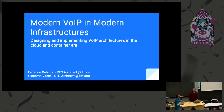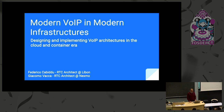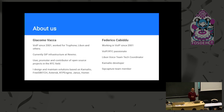Next up we have Giacomo, an old-timer from the room, and he's going to tell us about modern VoIP infrastructures. He's been involved with various companies using open source components, including the Kamailio project and other projects in the area like Janus, Asterisk, FreeSWITCH, and RTP Engine.